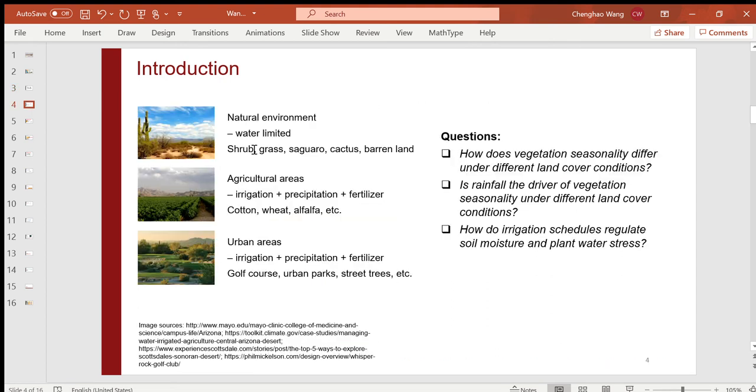The landscapes in Phoenix metro can be broadly classified into three categories. Natural vegetation is in general water limited. These include shrub, grass, saguaro, and other different types of vegetation.